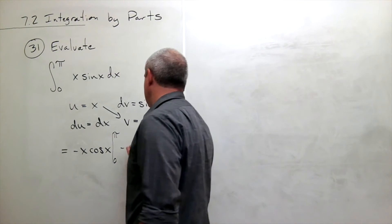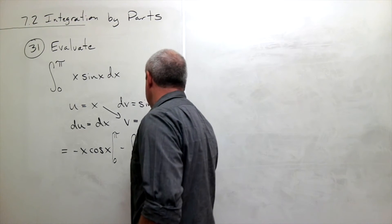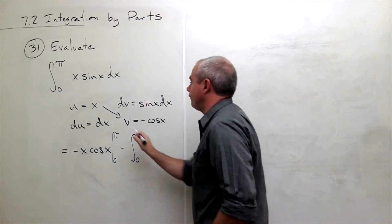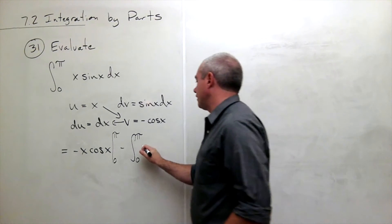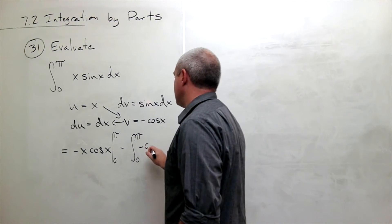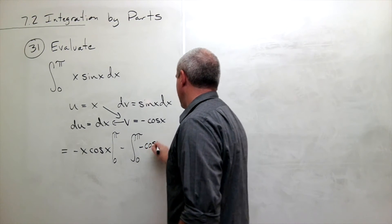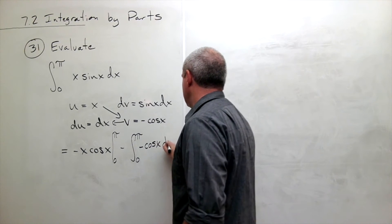Okay, minus integral from 0 to pi of v du, which is negative cosine of x dx.